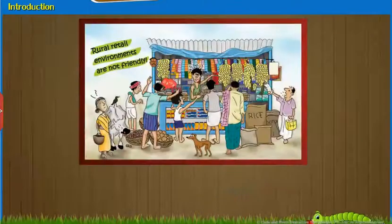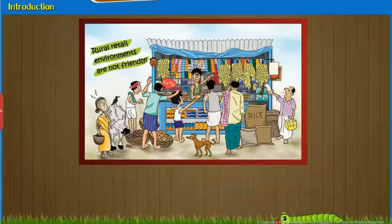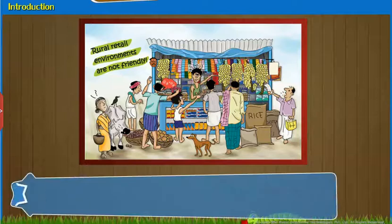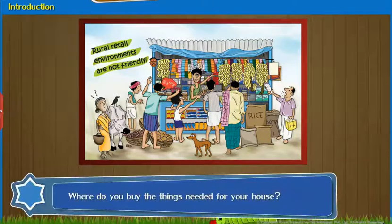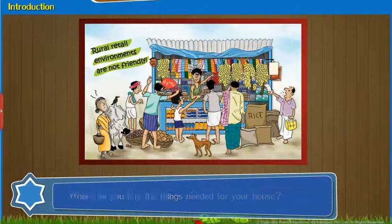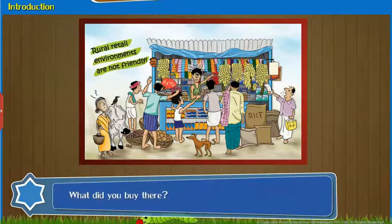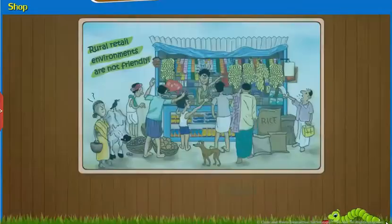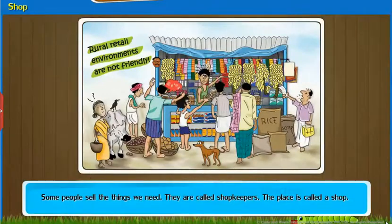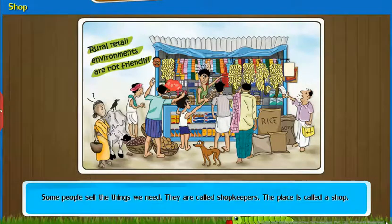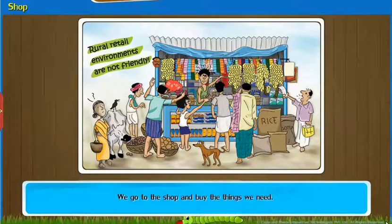Introduction: Observe the given image and answer the questions that follow. Where do you buy the things needed for your house? Have you ever been to a shop? What did you buy there? Some people sell the things we need. They are called shopkeepers. The place is called a shop. We go to the shop and buy the things we need.